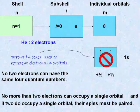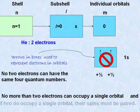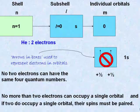So far, we have seen what is meant by no two electrons can have the same four quantum numbers. We have also seen what is meant by if two electrons occupy a single orbital, their spins must be paired.